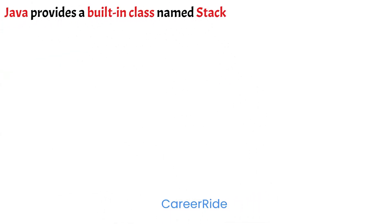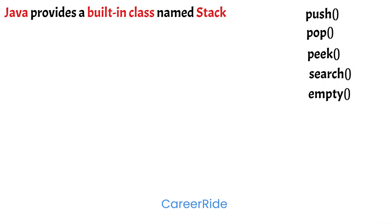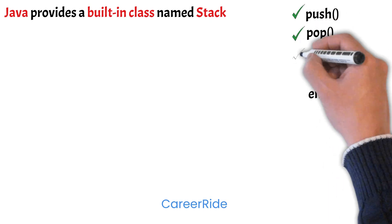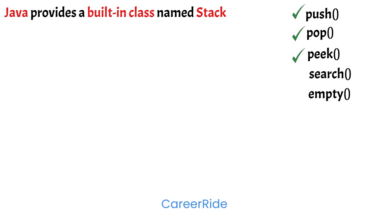Java provides a built-in class named Stack that provides the functionality of a stack data structure. There are five methods in the Stack class that are commonly used: push, pop, peek, search, and empty. Push is used to add an element to the top of the stack. Pop is used to remove an element from the top of the stack. Peek method returns an element from the top of the stack. Search method returns the position of an element from the top of the stack. Empty method is used to check whether the stack is empty or not.